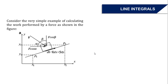So vector functions oftentimes need to be integrated. For example, if a force is specified and we want to calculate the work performed by a particular force, then we need to integrate that force along the path where it is applied. We know that work is equal to force times displacement, and force and displacement are vector quantities, so they have magnitude and direction. However, the integration result we get — the work — is a scalar quantity.